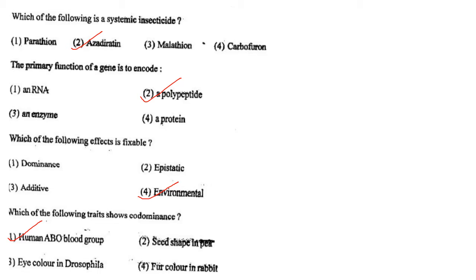Next one: Which of the following is a systemic insecticide? Option 1, parathion; option 2, azadirachtin; option 3, malathion; option 4, carbofuran. Answer is option 2: azadirachtin.